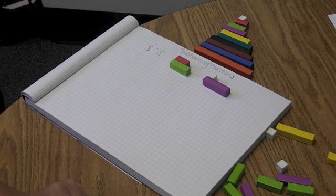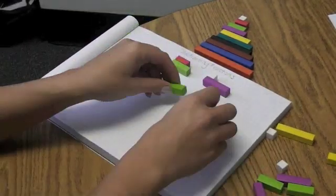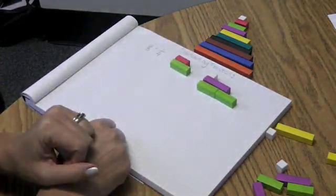So I'm going to start trying to see if I can get my two light greens to be the same length as one purple, which of course is impossible.